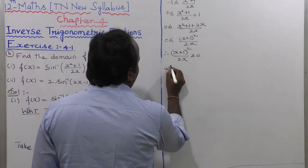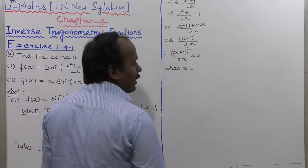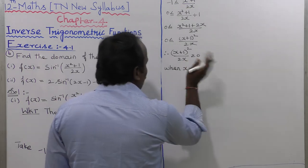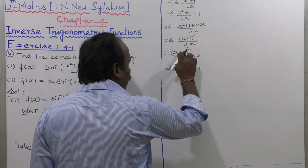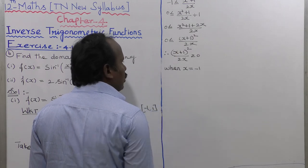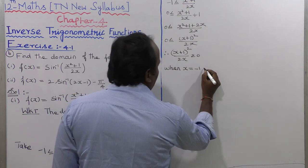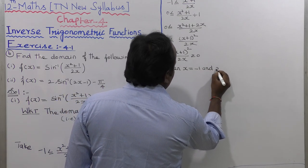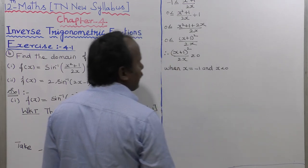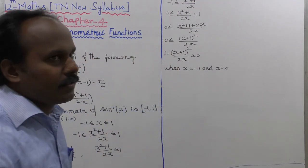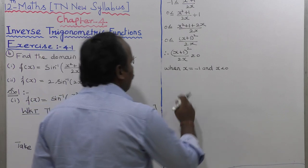When x equals minus 1, the numerator (x plus 1) squared goes to 0, so 0 equals 0 and the inequality is satisfied. Also, for x less than 0, the inequality is satisfied. So the first condition gives x less than 0.